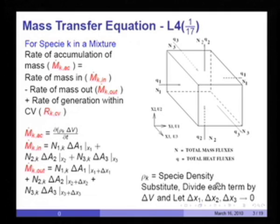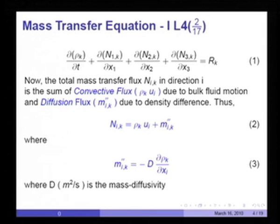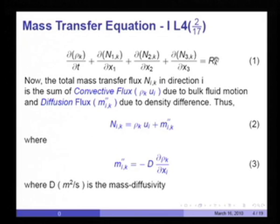ρ_k is the species density. If we now substitute these expressions in the verbal statement and divide each term by δV, which is the product of δx₁, δx₂, δx₃, and let each of these increments tend to zero — a procedure we have gone through before — you will get an equation of the type: dρ_k/dt plus net transport of species k in directions 1, 2, 3 equals rate of generation of species k.